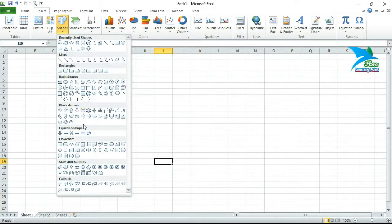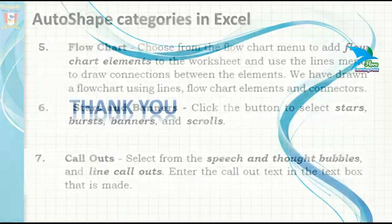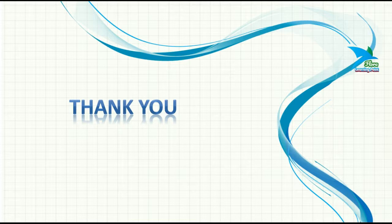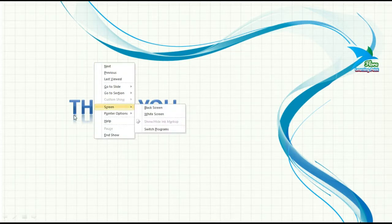These are the various options and categories available inside Shapes. To draw any of these shapes, click on Insert, then in the Illustration group click the Shapes button. In this way you will be able to draw any kind of shape on the body of a worksheet. If you have any doubt related to auto shapes, feel free to contact me anytime. Thank you.